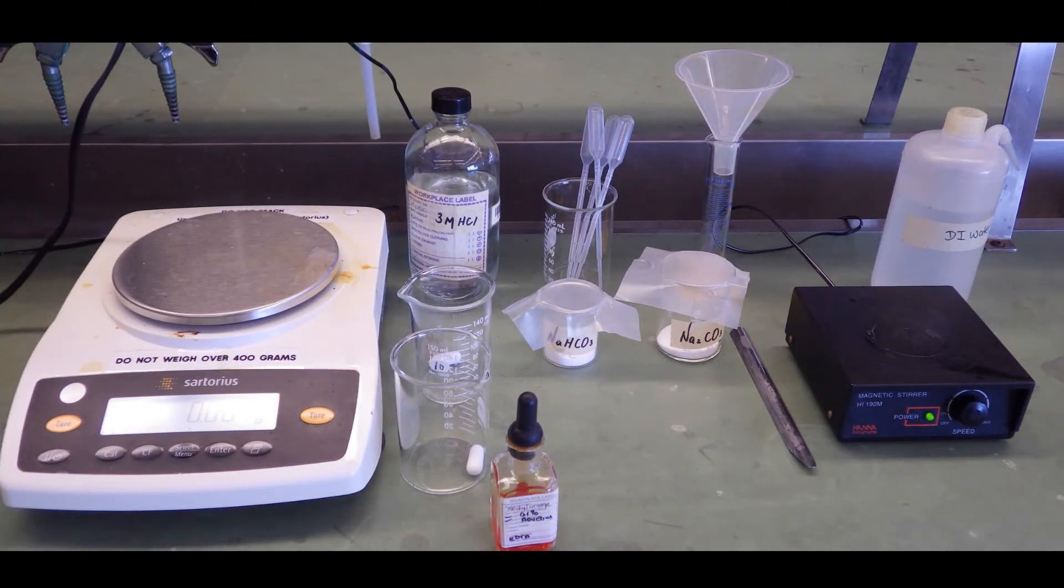Here's the equipment that we'll need for this experiment. Obviously we'll need a top loading balance. In the beakers we have these white powders. That's pure sodium bicarbonate and pure sodium carbonate. We'll weigh these into our 150 ml beakers. We'll need a stir bar, a mag stirrer on the right. Here's our methyl orange indicator up front. We have this approximately 3 molar HCl in a bottle. We have a 25 ml graduated cylinder in the back and a wash bottle. And that's about all we need.